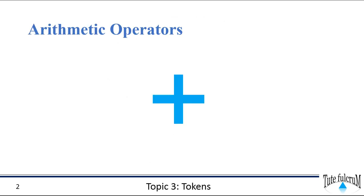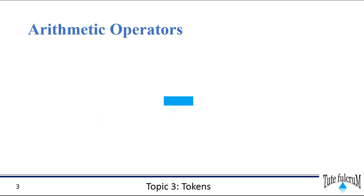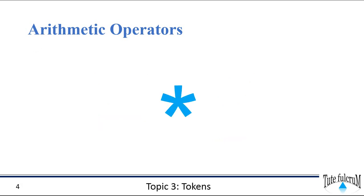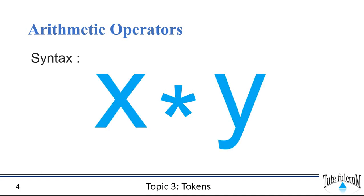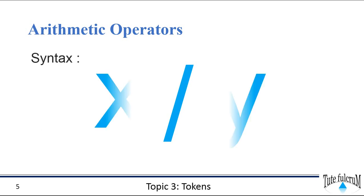The addition operator adds the two operands. For example, x plus y computes the sum of x and y. The subtraction operator subtracts two operands — x minus y computes the difference between x and y. The multiplication operator multiplies two operands; x into y evaluates the product of x and y. The division operator divides the first operand by the second; x divided by y divides x by y.